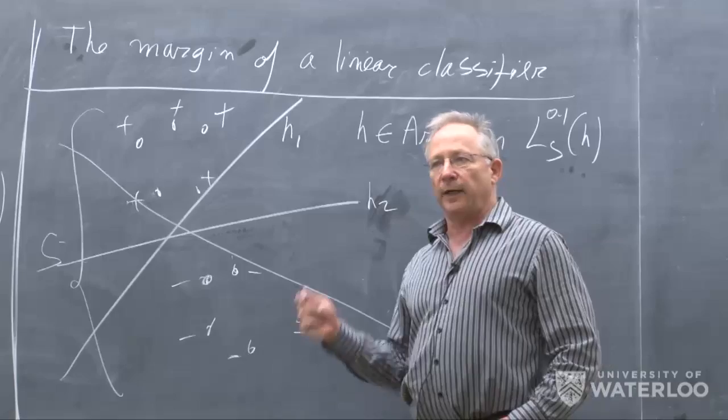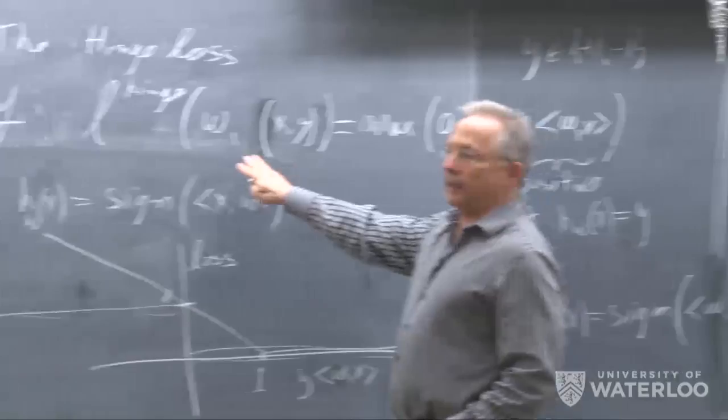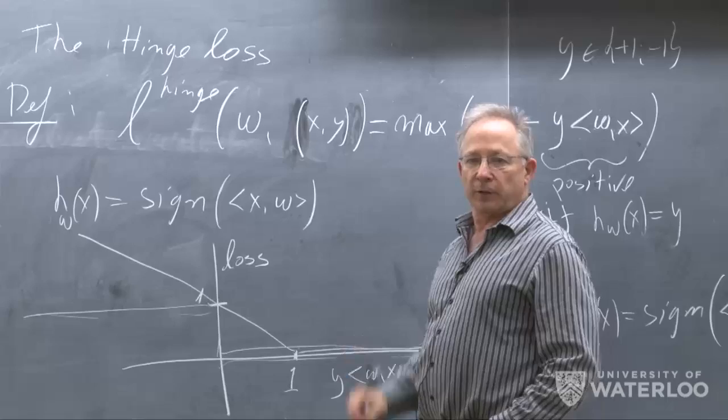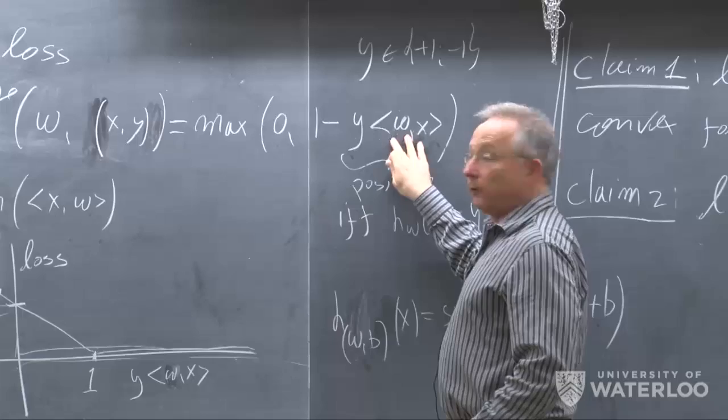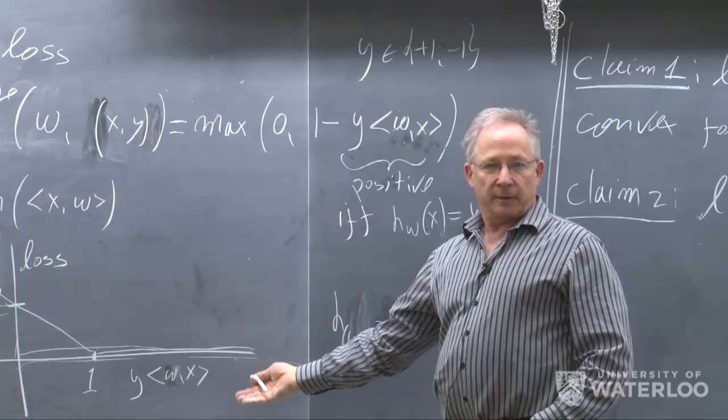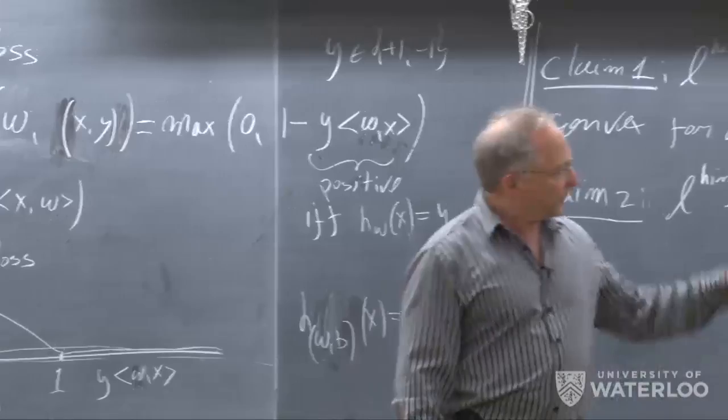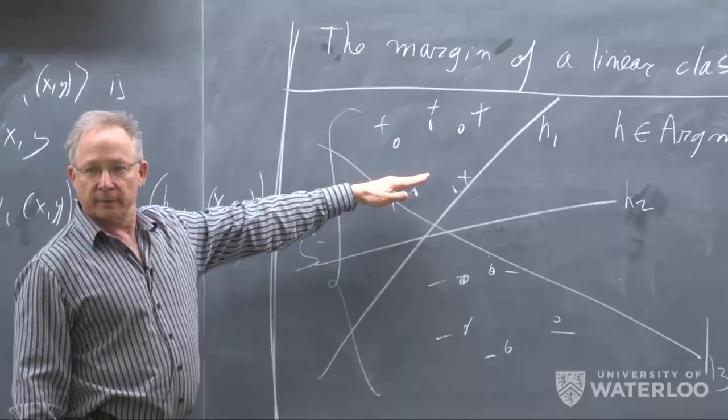What I claim is that this consideration of large margin is consistent with trying to minimize the hinge loss. There is a close connection between this dot product and the margin. By picking a classifier with a small hinge loss, we are picking a classifier that has a high margin away from the points of the sample.